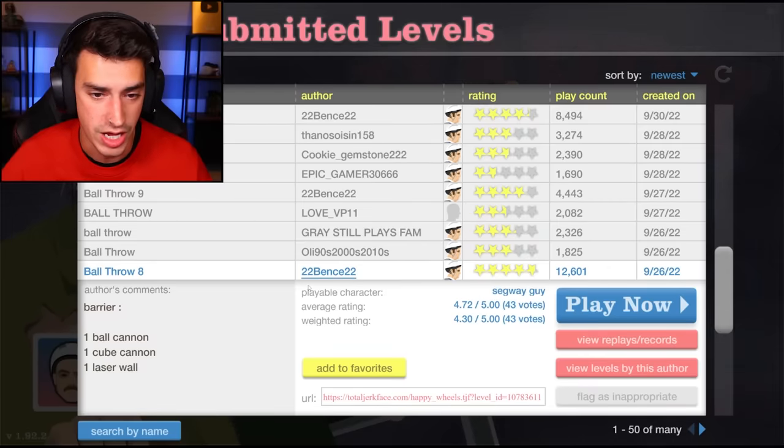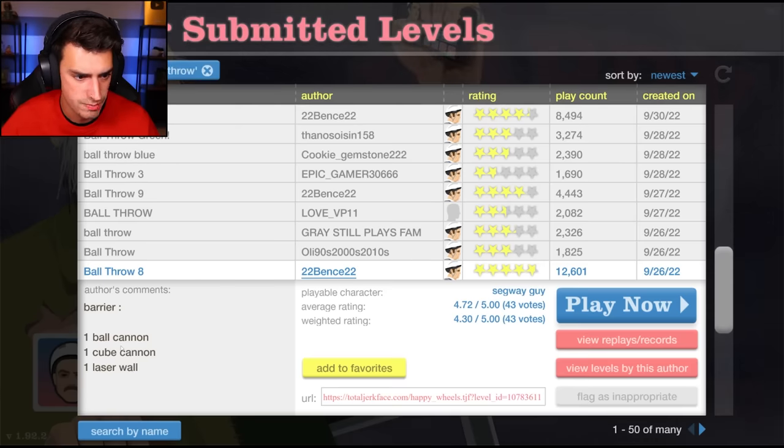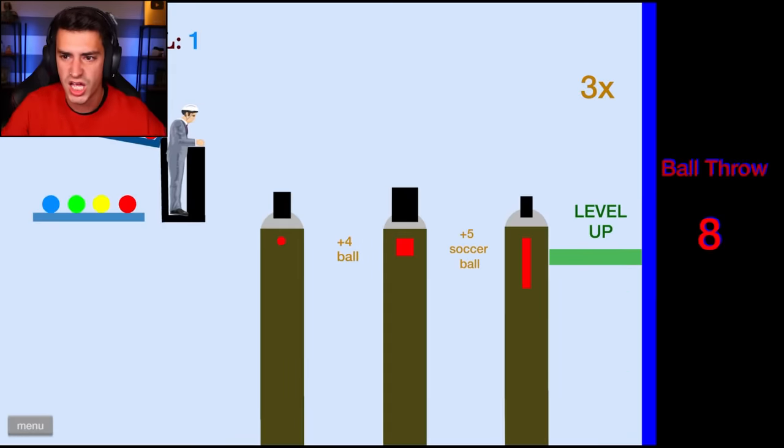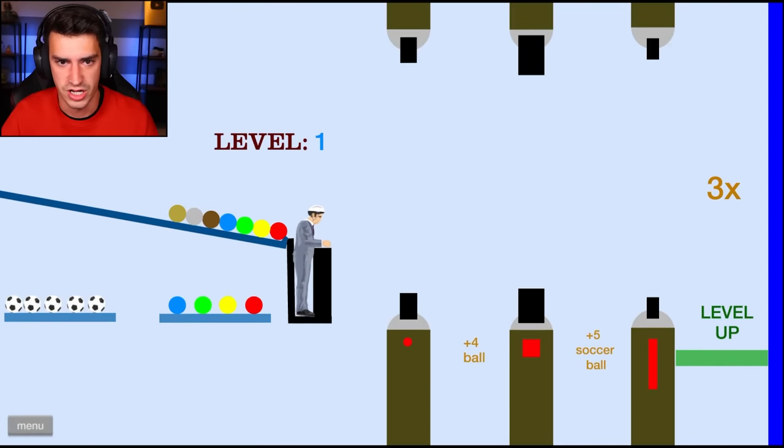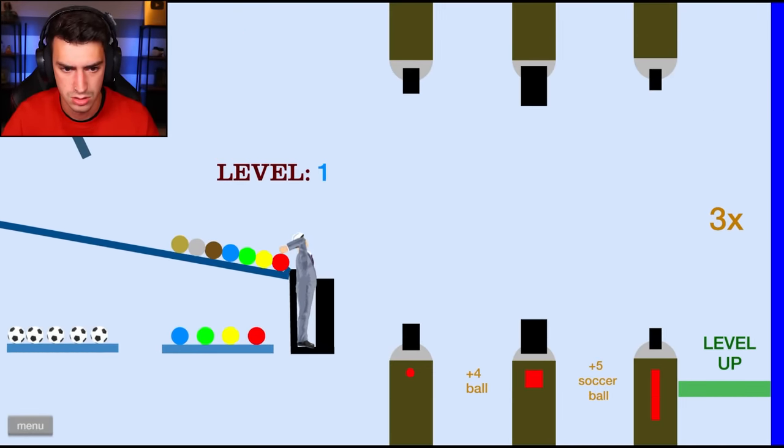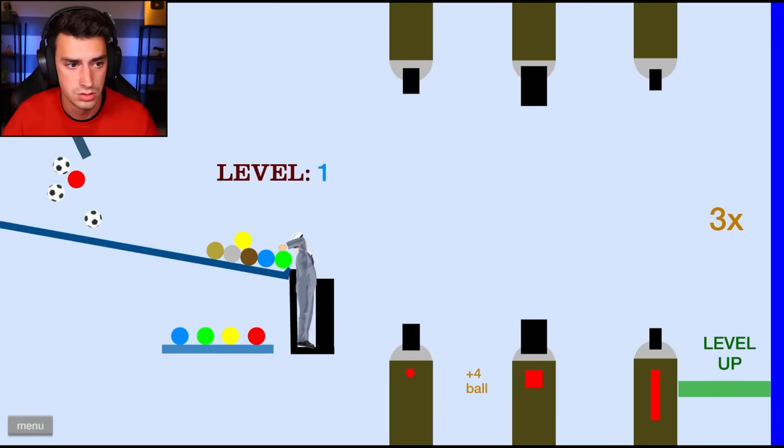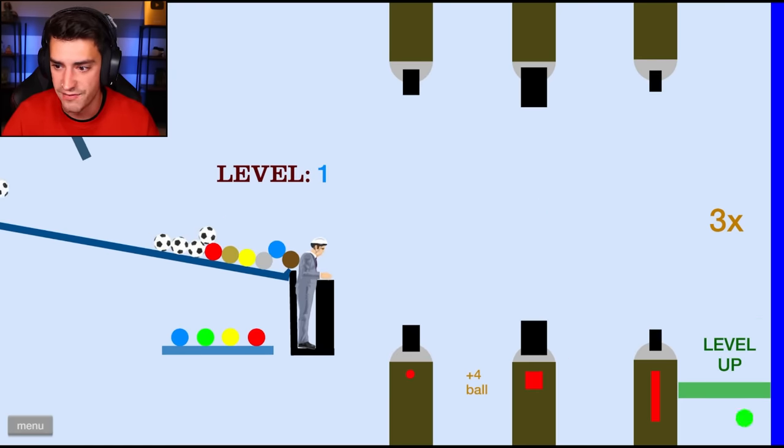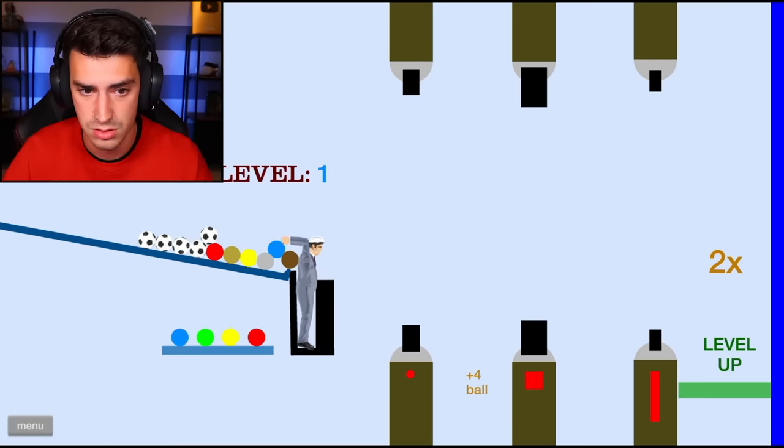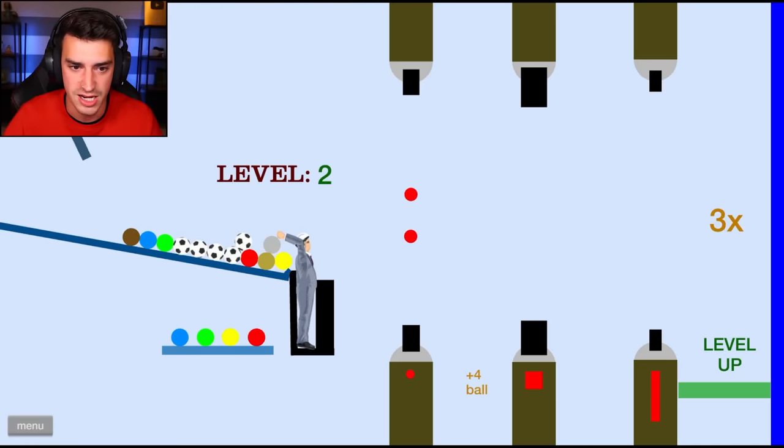Ball throw eight. Okay. This was made by the same person. Barrier. One ball cannon, one cube cannon, one laser wall. Huh? Oh, boy. What do I do? Am I just trying to get it in the level up thing? Tell me I won't. Okay. I got five soccer balls. Oh, no. I didn't. They disappeared. Oh, no. They're here. Thank you. I appreciate it. Level up. What'd I get? Nothing? I'm confused. Oh, I see. Okay. It's getting more difficult. This is cool. Not difficult enough.